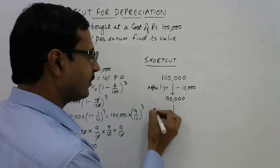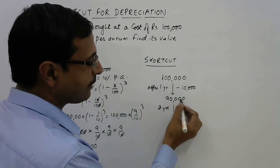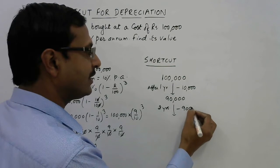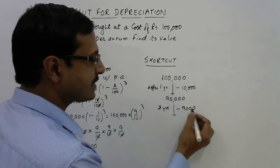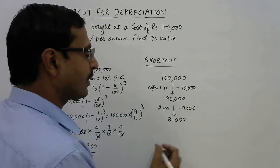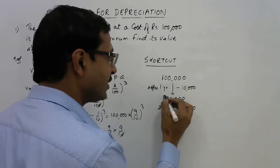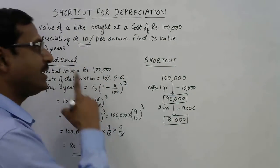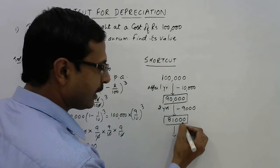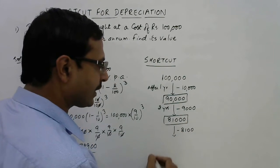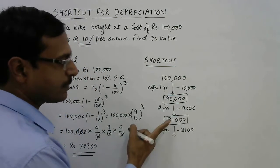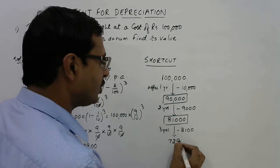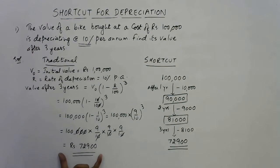After two years, find 10 percent of 90,000 — just remove one zero — that is 9,000 to be subtracted. So 90,000 minus 9,000 gives 81,000 as the value after two years. For three years, remove one zero from 81,000: that is 8,100 to be subtracted. So 81,000 minus 8,100 gives 72,900, which is the exact same answer. These are the shortcuts you need to master. That was the first question.